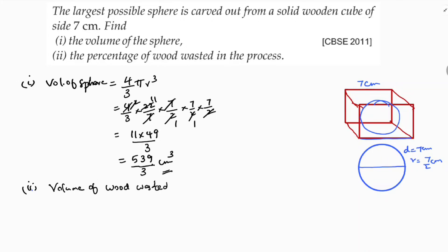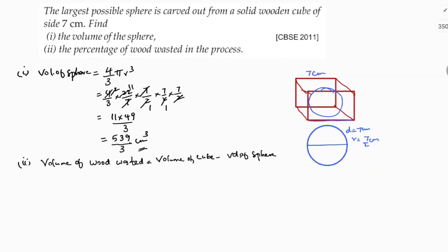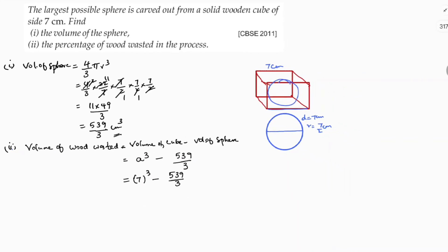Volume of wood wasted equals volume of cube minus volume of sphere. Volume of cube is A cubed, so that is 7 cubed. Minus volume of sphere, which we already got as 539 by 3. So: 7 cubed minus 539 by 3.